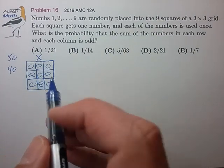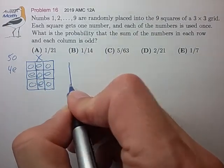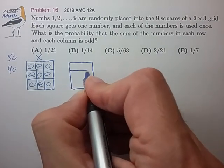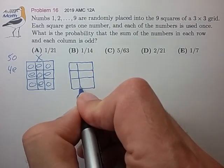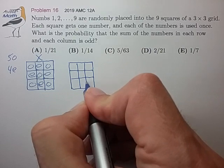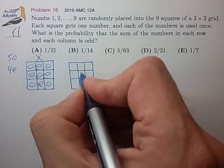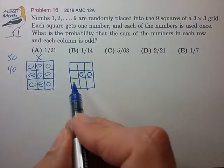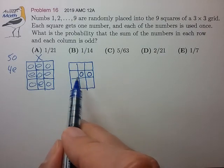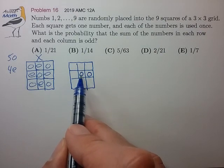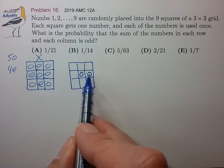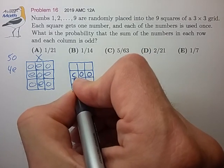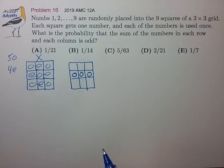Since that doesn't work, it tells me something important. Somewhere in this grid, I'm going to have to have two odd numbers next to one another. It doesn't really matter where they are, so I'll just put them there for argument's sake. And once we place these two odd numbers, that forces this square to also be odd, so that the row adds to an odd number.